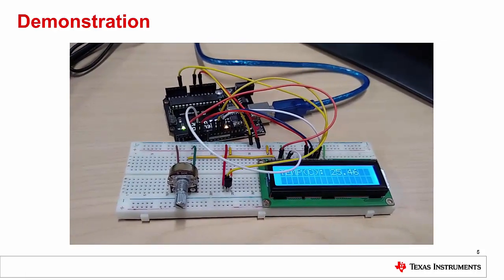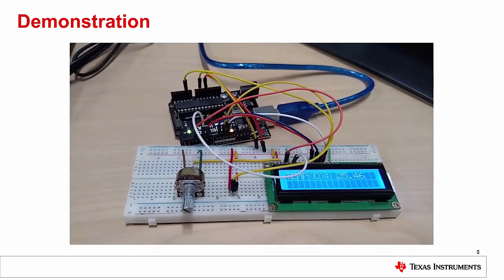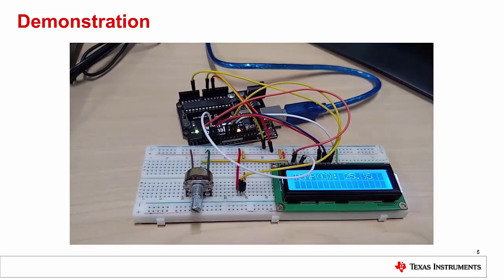The potentiometer is necessary for the LCD display, which is outputting the measured temperature about once a second. Now you can see the LM35 is reading out the room temperature of about 25C or 77F,